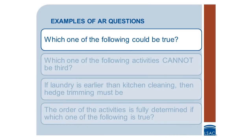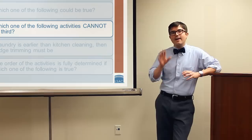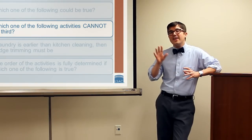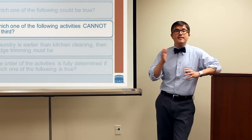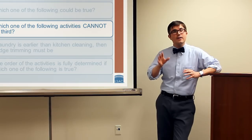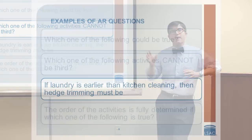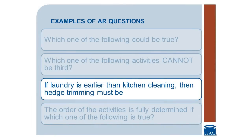So we may ask: which one of the following activities cannot be third? Importantly, some AR questions will have an if-then form, where the question introduces some further supposition, and then asks what could, must, or cannot be true. We may ask, for example: if laundry is earlier than kitchen cleaning, then hedge trimming must be — and here the answer choices would be options like first, second, etc.